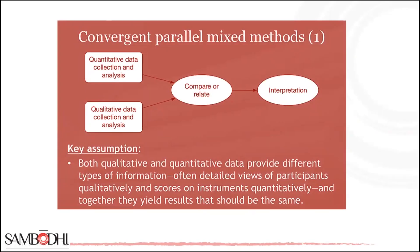In a convergent parallel design, you collect quantitative and qualitative data at the same time and analyze them separately. After both analyses are completed, compare your results to draw an overall conclusion.